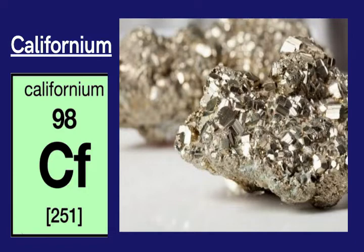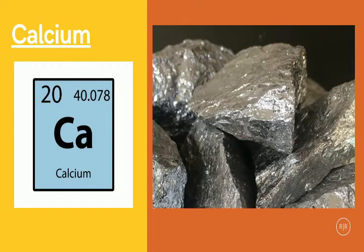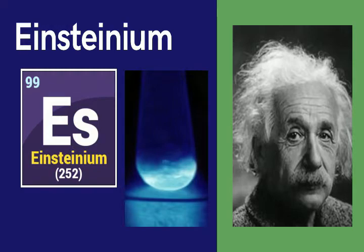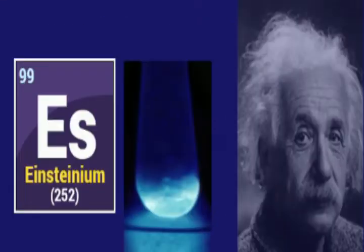For example, element Californium which is the 98th element in the periodic table is named after California. Calcium which is the 20th element in the periodic table is named after its mineral calcite. The element Einsteinium, the 99th element, is named after famous scientist Albert Einstein.